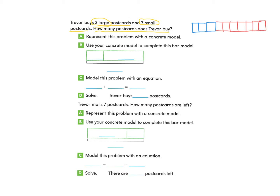Let's take a look at part B: use your concrete model to complete this bar model. My first section has three blue cubes, because those represent the large postcards. Then I have seven red cubes that represent the seven small postcards. So I have three and seven, and when I put them all together, I have a total of ten.